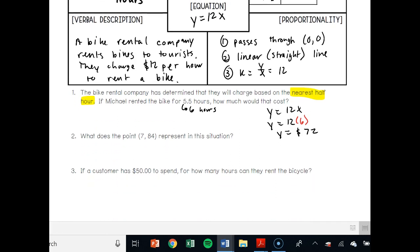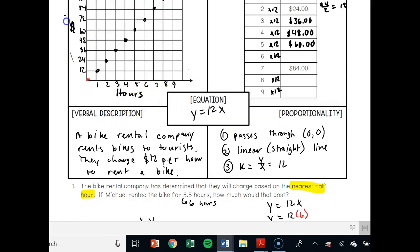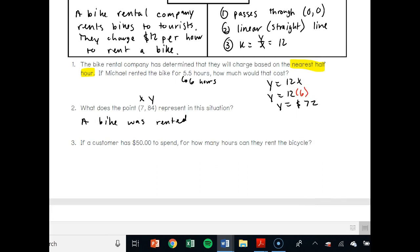What point does 7, 84 represent? That means a bike was rented. You just ask yourself, if this is x and this is y, what do x and y mean? If you go back up to our graph, x is the hours and y is the dollars. So a bike was rented for seven hours and costs $84 to rent. Very simple.